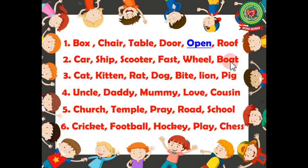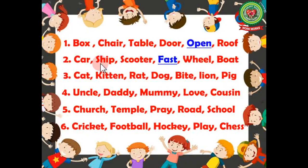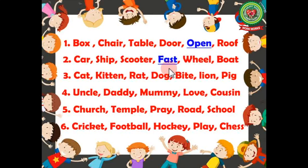Let's check the answer. 'Fast' is not a naming word, but car, ship, scooter, wheel, and boat are all names of things, so they are nouns. We will underline 'fast'. Number three: cat, kitten, rat, dog, bite, lion, pig — underline the word that is not a naming word.